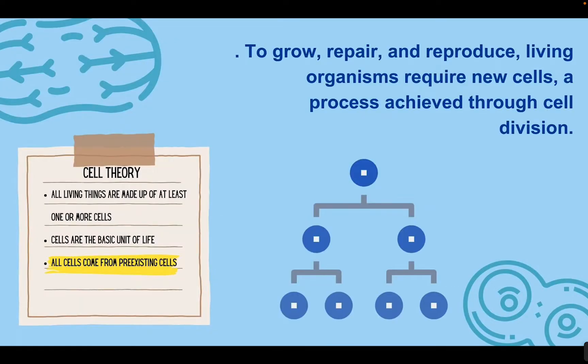Living things are made of cells — this is part of the cell theory. On this post-it note, I have the three tenets of the cell theory: all living things are made of at least one or more cells, cells are the basic unit of life, and all cells come from pre-existing cells. In order for organisms to grow, repair damage, and even reproduce, we need new cells, and those cells need to come from previous cells. This process is done through what we call cell division.